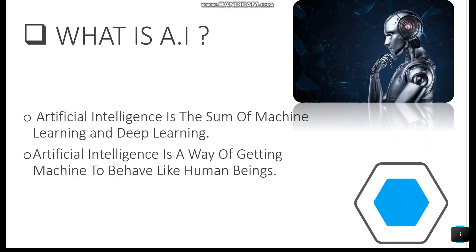Artificial intelligence is the sum of machine learning and deep learning. Artificial intelligence is a way of getting machines to behave like human beings.